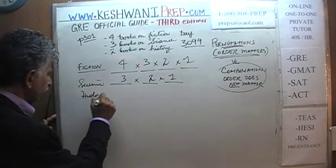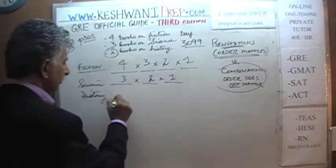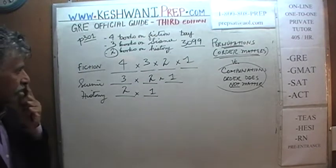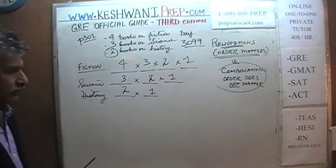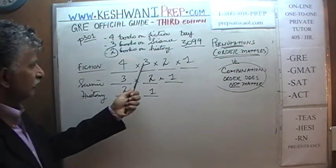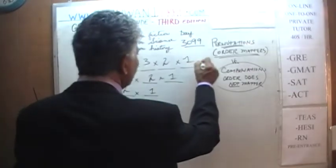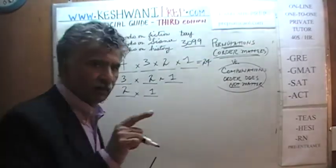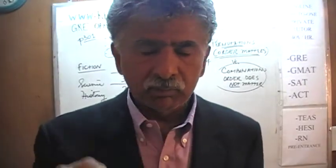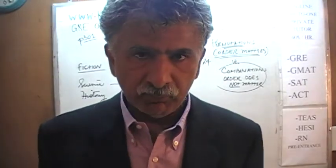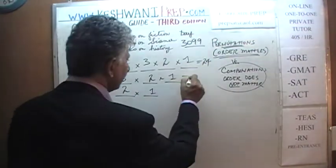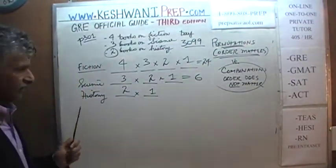History — there are only two books. So there are two ways you can fill up the first spot and the remaining book fills the last. Four times three is twelve, times two is twenty-four. So there are twenty-four ways to arrange the four fiction books. Similarly, there are six different permutations possible for the science books.